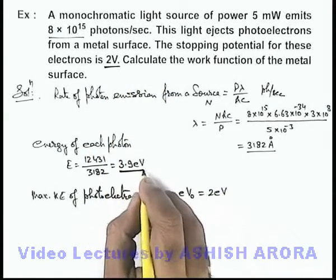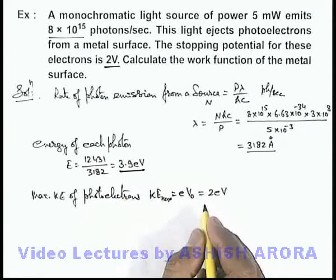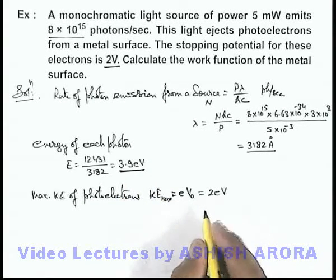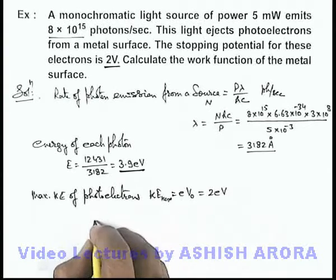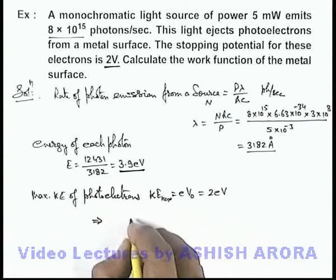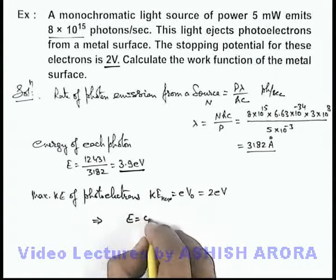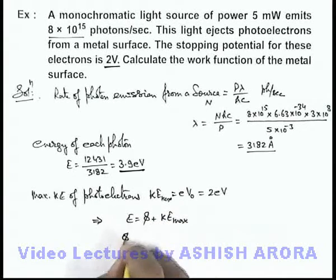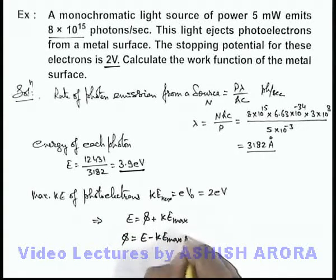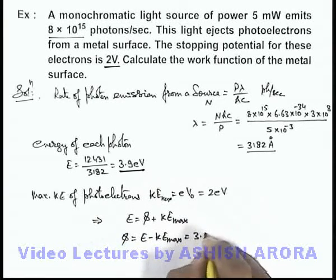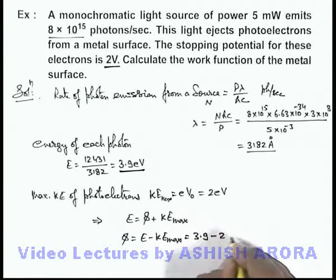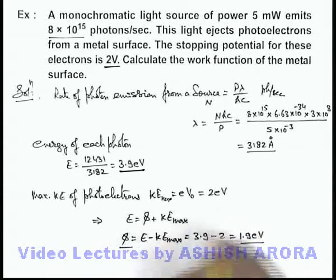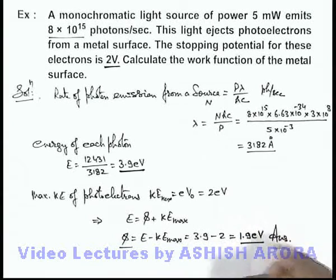We know that the total energy of the photon is used in the work function and in the maximum kinetic energy. So by the photoelectric effect equation, E = φ + KE_max, which gives φ = E − KE_max. The photon energy is 3.9 eV and the maximum kinetic energy is 2 eV, so the work function is 1.9 electron volt. That is the answer to this problem.